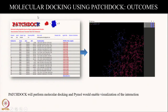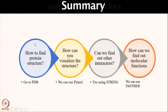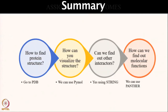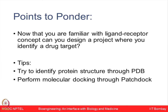Molecular docking using Patchdock is now finished and we could see how P53 and MDM2 interact. Thus in this assignment we learned how to identify the structure of a protein — we can query for any protein, go to the protein data bank, and find out more about the structure. We could visualize proteins like hemoglobin alpha 1, and also P53 and MDM2 using PyMOL. We found out other interactors of a protein using STRING, which gave us a list of proteins that interact with the query protein. Using that list we found out molecular functions and pathway details using Panther. Thus we could learn a lot of important features of a particular protein using simple bioinformatic tools like PyMOL, STRING, PDB, and Panther. Thank you.